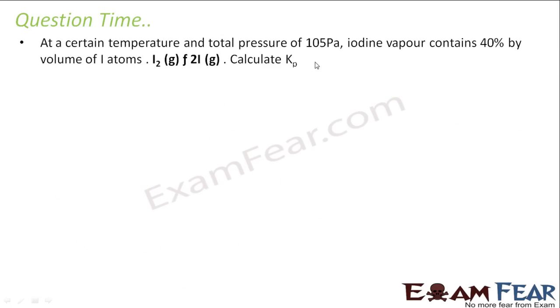So at a certain temperature and total pressure is 10 to the power 5 Pascal, iodine vapor contains 40% by volume of I atoms. So this is iodine gas, this is iodine atoms.